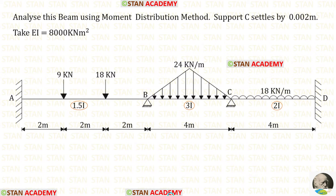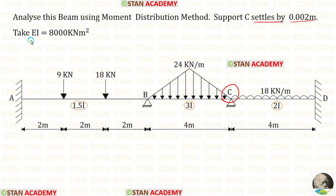Hello everyone. Today we are going to analyze this beam using the moment distribution method. In this beam the support C settles by 0.002 meter. The flexural rigidity EI is given as 8000 kilonewton meter square.